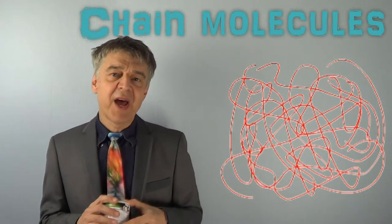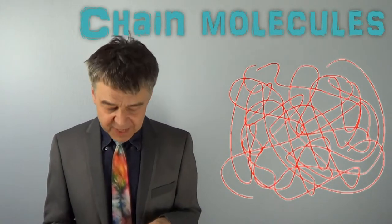The molecules of the galactomannan, of the guar gum, consist of long chains. Think of them as a pot of cooked spaghetti.